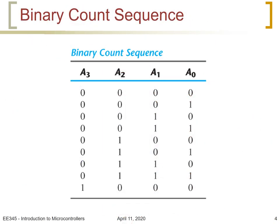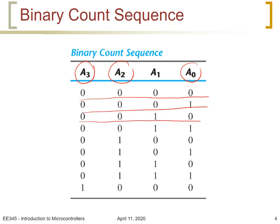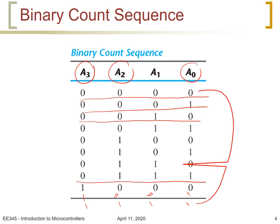The binary sequence counted by this counter, with bits A3, A2, A1, A0, goes from 0, 0, 0, 0 to 0, 0, 0, 1, and continues all the way to 1, 0, 0, 0, then 1, 0, 0, 1, and all the way up to 1, 1, 1, 1, before returning back to 0, 0, 0, 0.